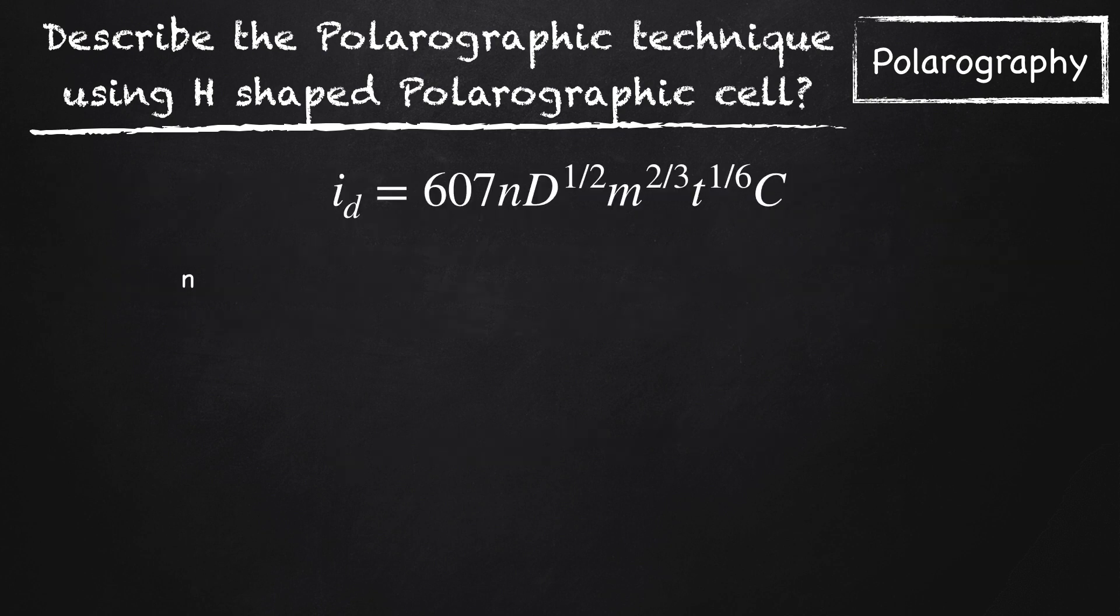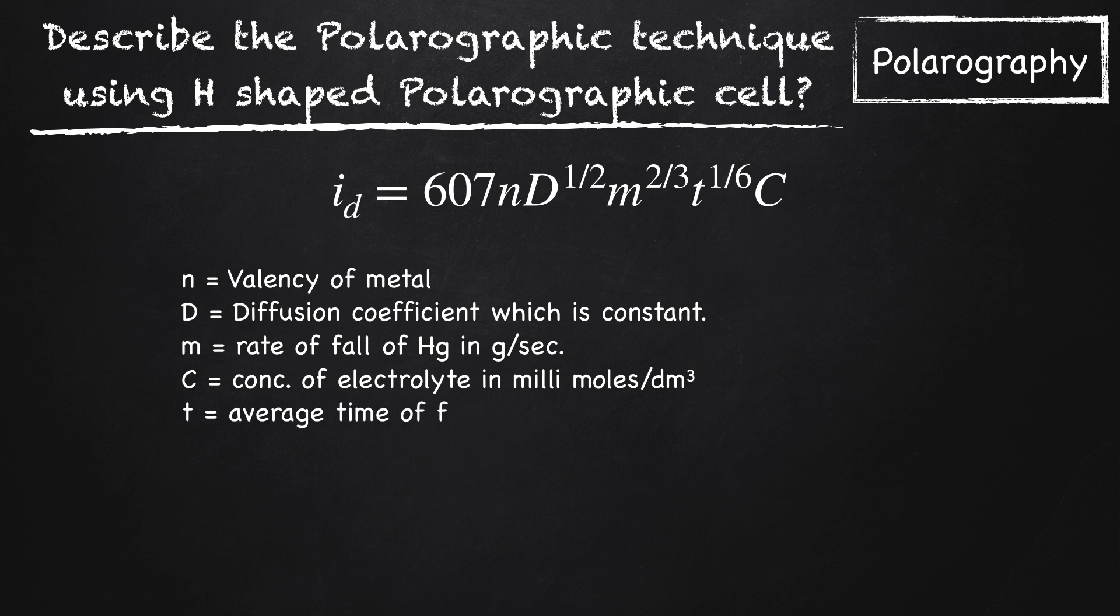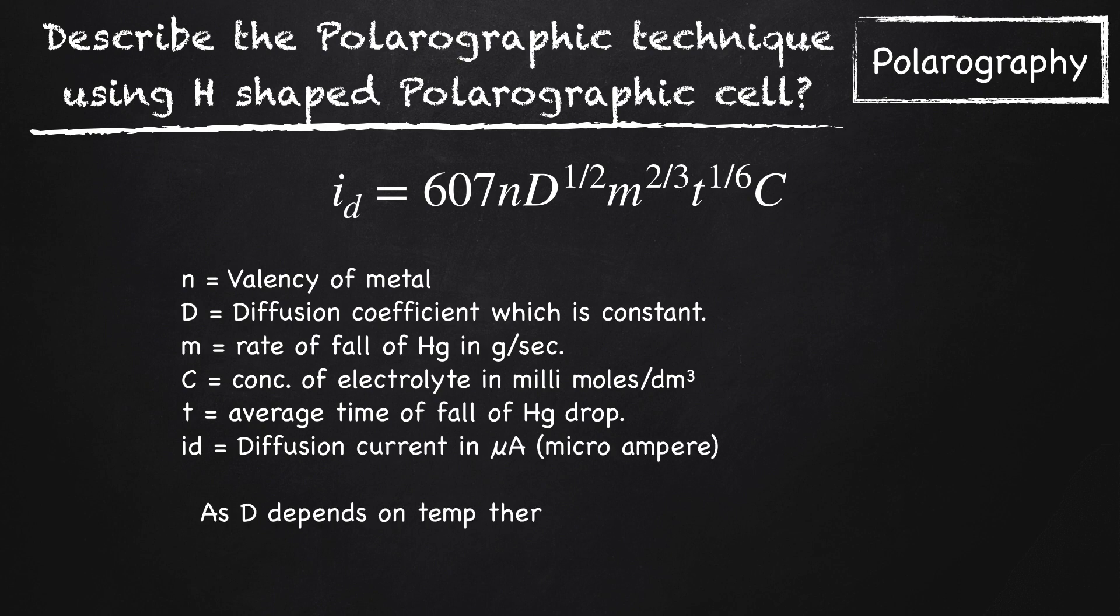where n is the valency of metal, D is the diffusion coefficient which is constant, m is the rate of fall of mercury in grams per second, C is concentration in millimoles per dm³, t is the average time of fall of mercury drop, and id is diffusion current in microamperes. As D depends on temperature, therefore id also depends on temperature.